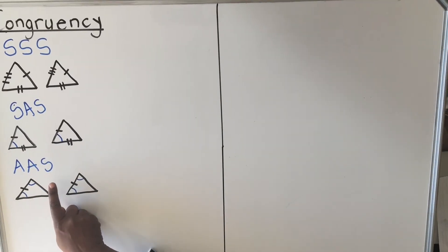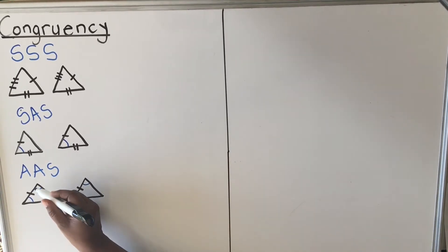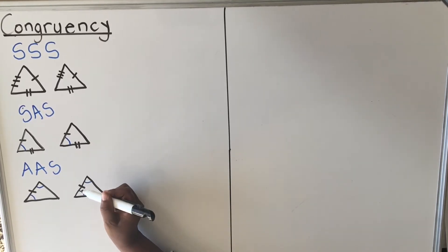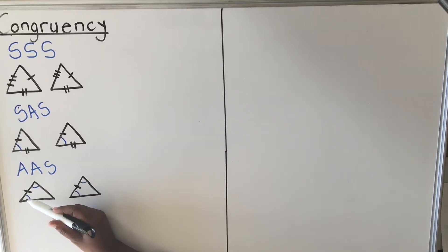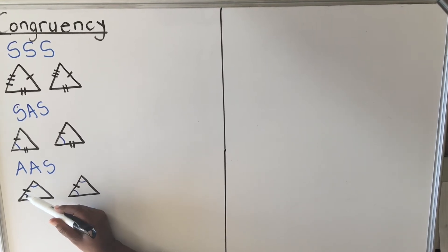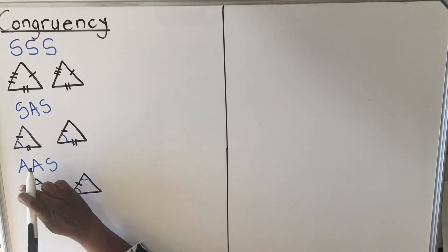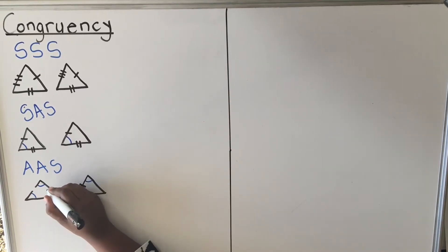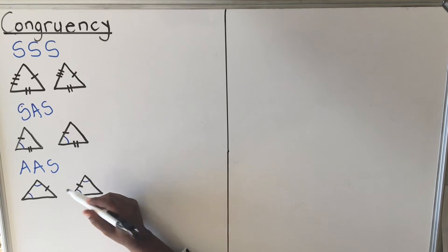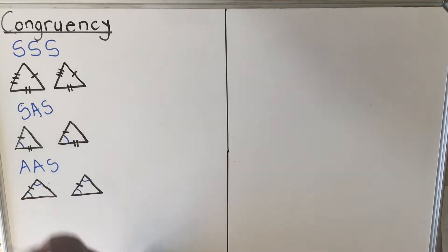The third condition is Angle-Angle-Side. You must have two angles that are equal — this angle equals that angle, and that angle equals that angle — plus a corresponding side. You need to look at where the side is. In this triangle the angles are here and the side is between the angles; it must be in the same position in the other triangle. The side must be the corresponding side in both triangles.